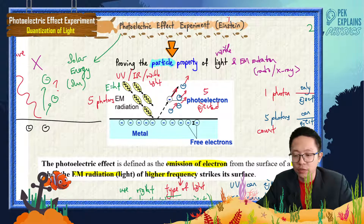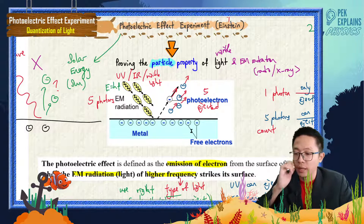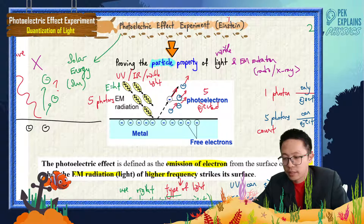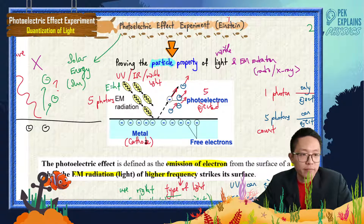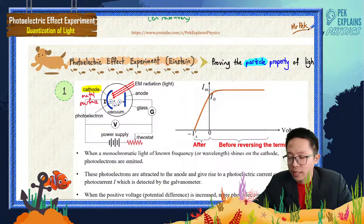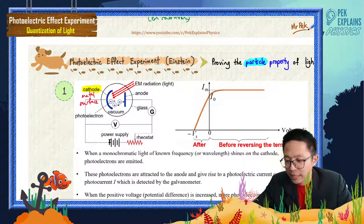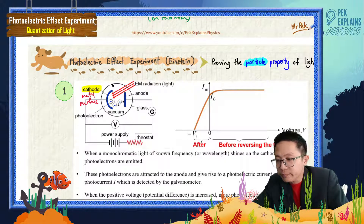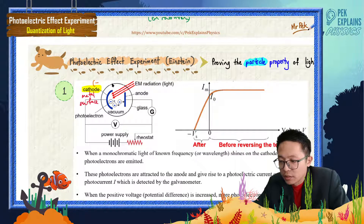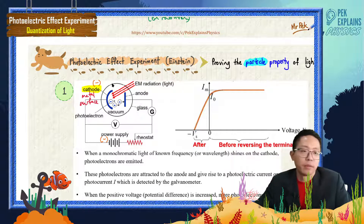The cathode has all the free electrons. The incident light is incident on this metal. This metal we use as cathode. This cathode is connected to the negative terminal, so it is a negative terminal with negative charge.